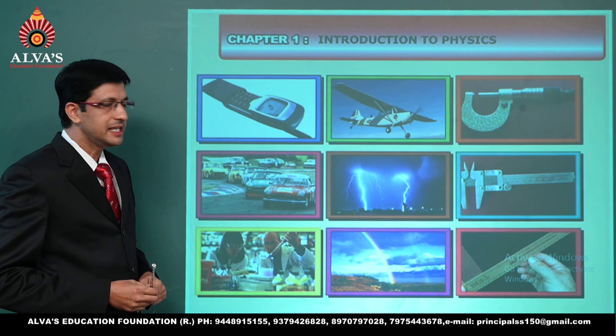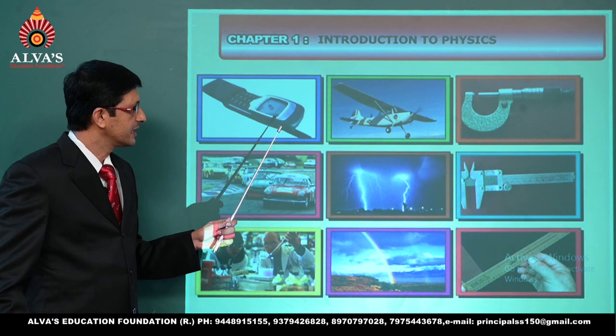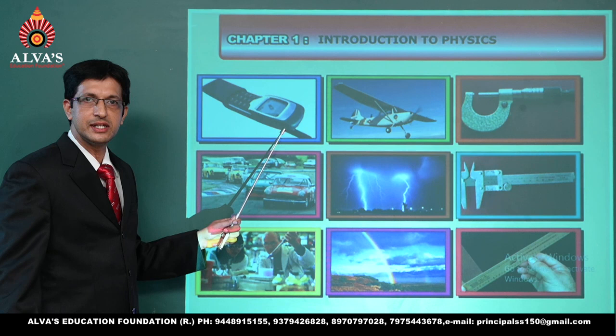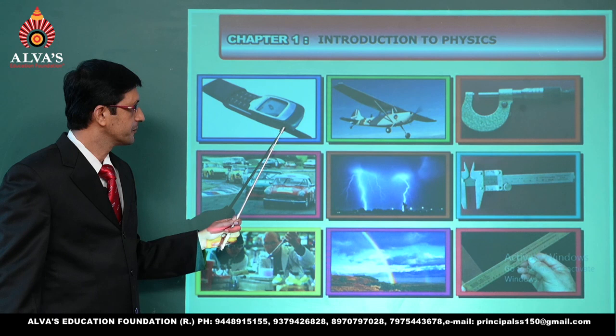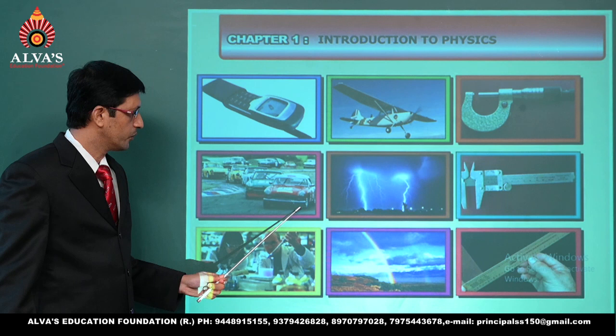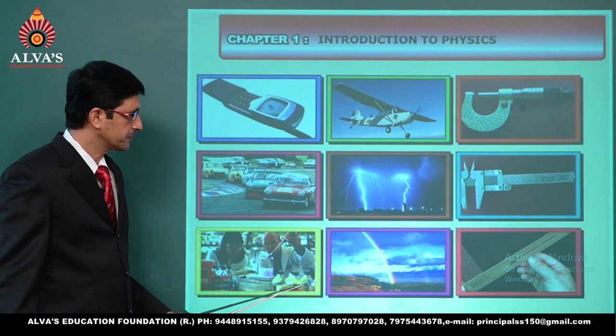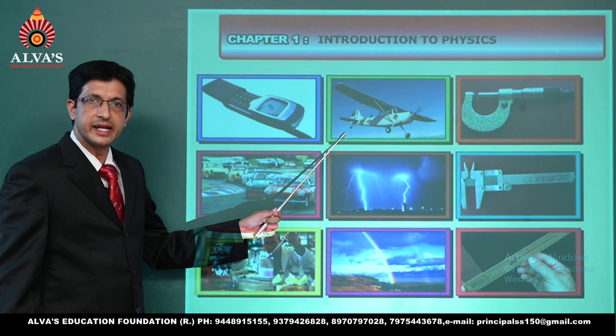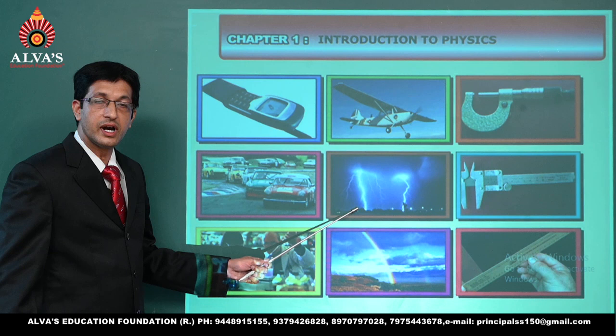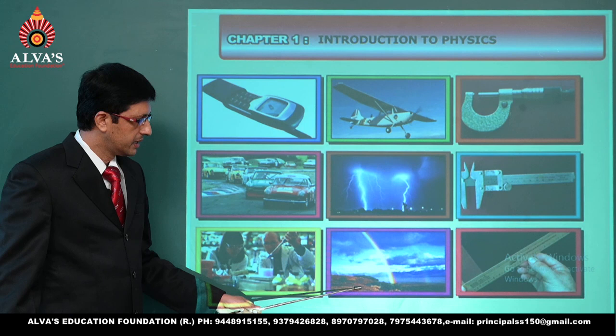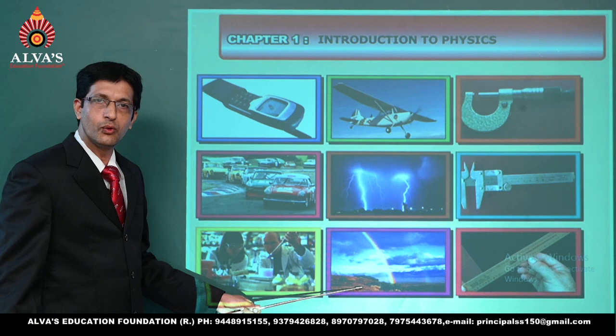Let us see what things we are having for today. Right now we can look at some pictures displayed here. Firstly we have a cell phone, then we have movement of cars. Here we can see two people doing some research in the laboratory. Here we have a glider, and here we have a natural phenomenon — the lightning. This picture shows the situation of how a rainbow occurs.